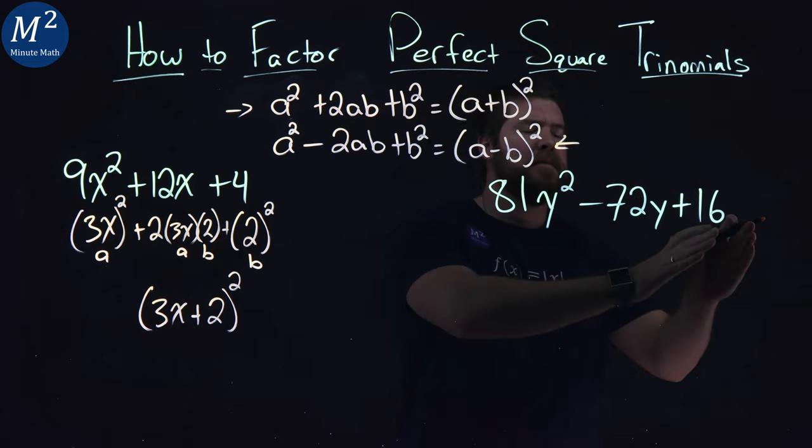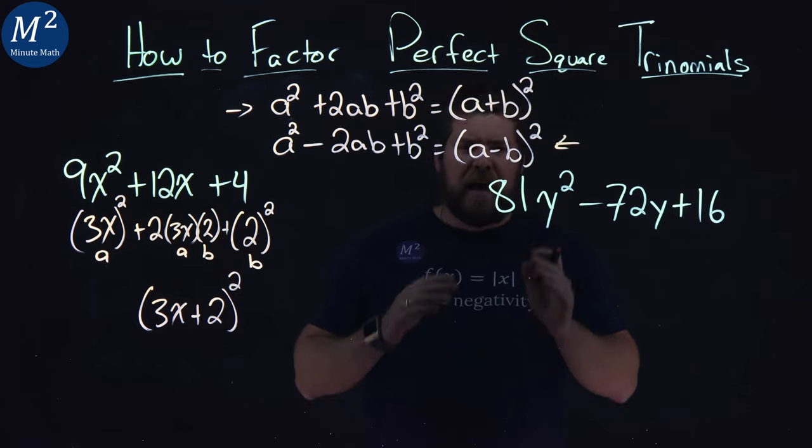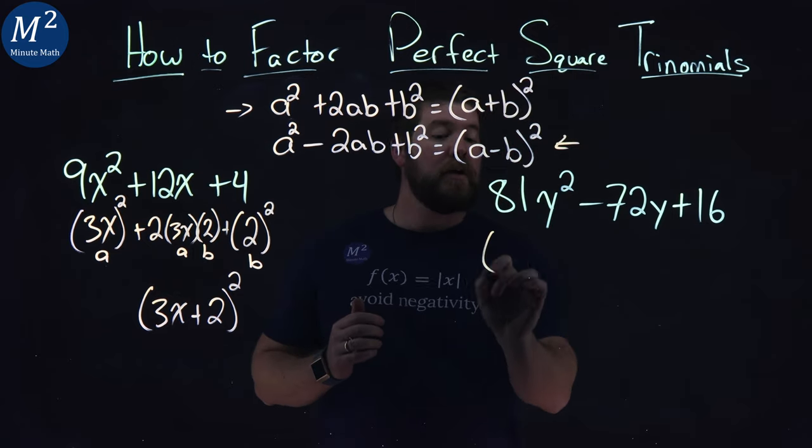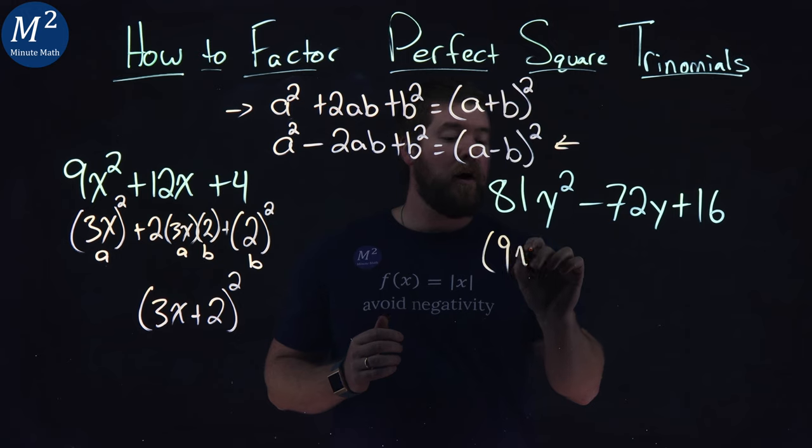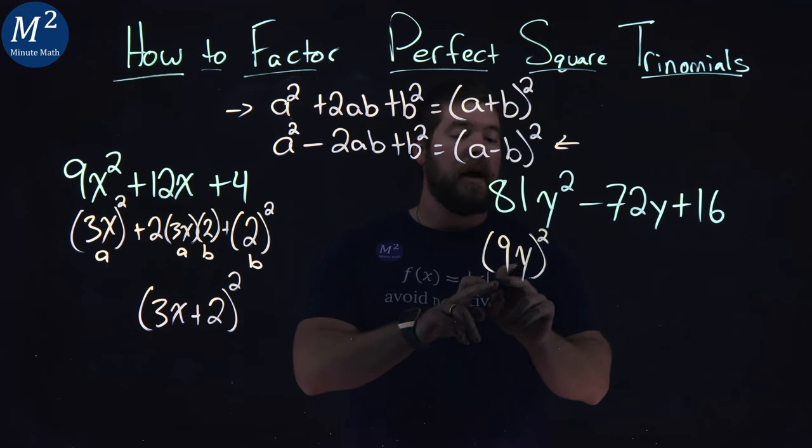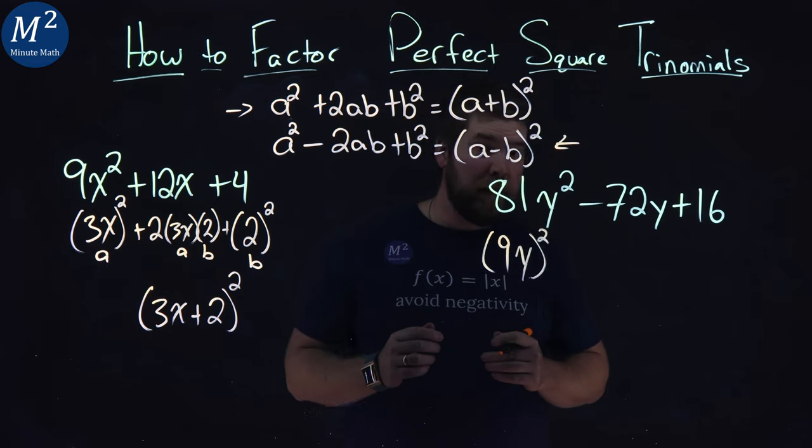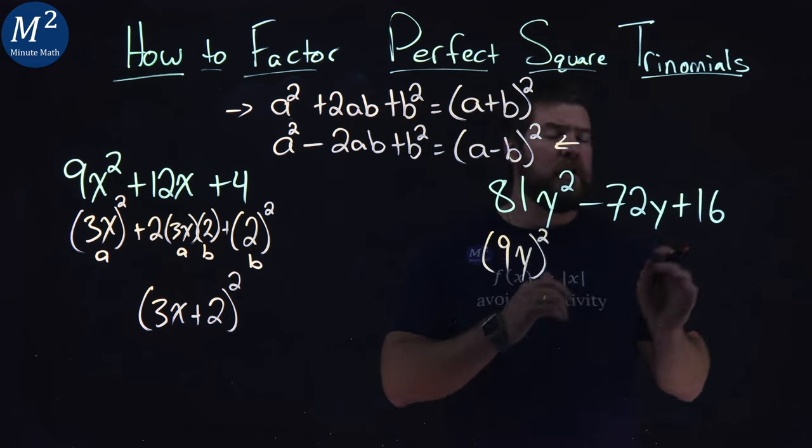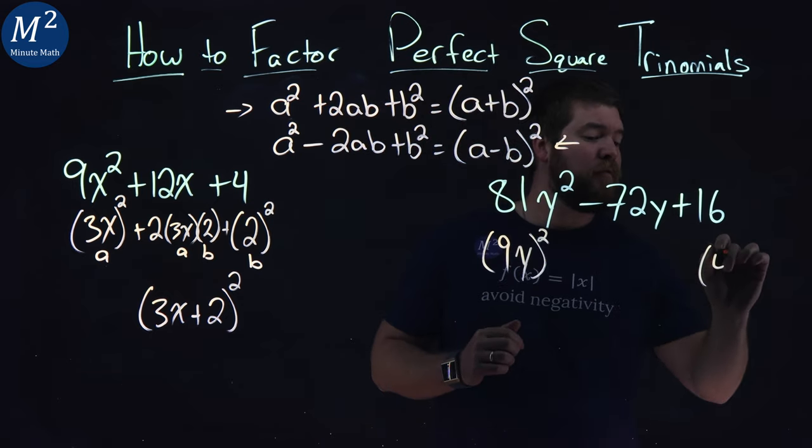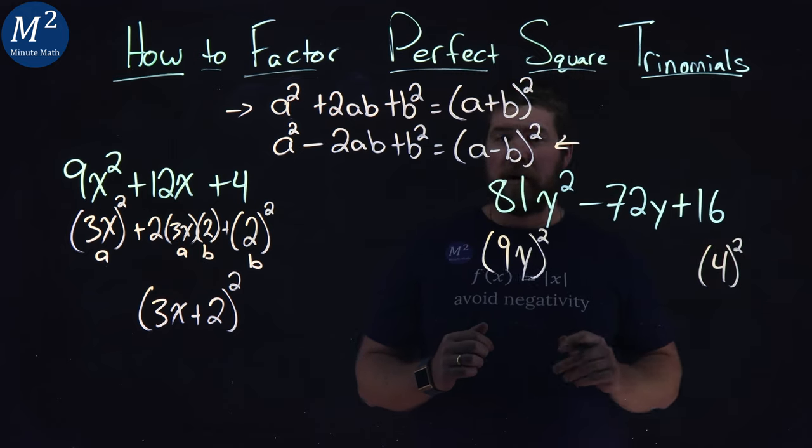Let's look at the first value and the last value first. 81y² can be rewritten as (9y)². 9 squared is 81, and y squared is y squared. Our last value, the 16, can be rewritten as 4², the perfect square.